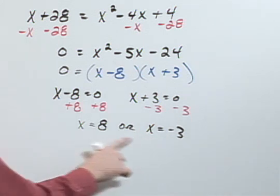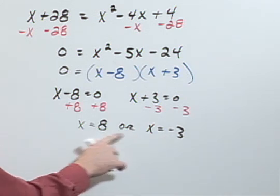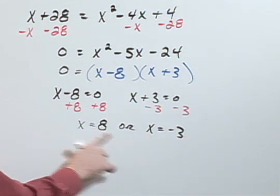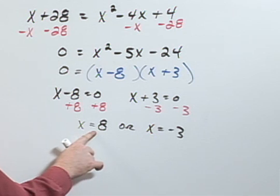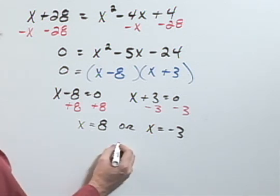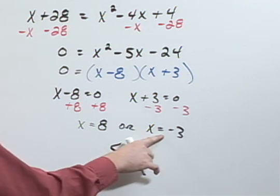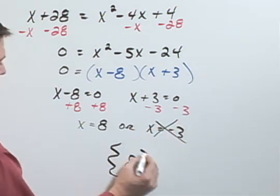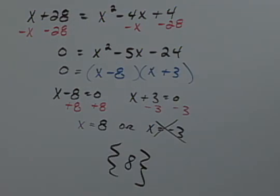Since I squared both sides, I have the chance for an extraneous root, so we need to be sure to check both x equal 8 and x equals negative 3. What we find is that x equals 8 works, so that's one of our solutions, but x equal negative 3 doesn't, and so my solution is simply 8.